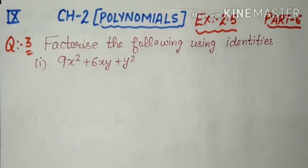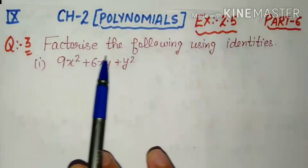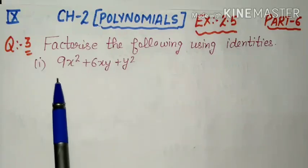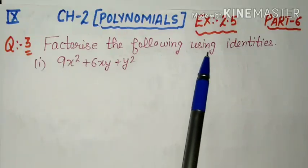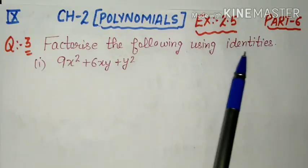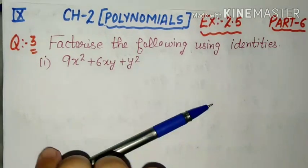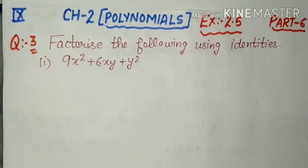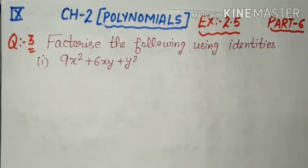Very easy questions hain. Just humne jo cheezein question number 1 and 2 mein kiya hai, same waise hi karna hai — identities check karni hain. Unka use karke questions ko solve karna hai. Question number 3 hai: factorize the following using identities. Jo bhi suitable identity us mein use ho rahi hai, us identity ka use karke hame iske factors banana hai.